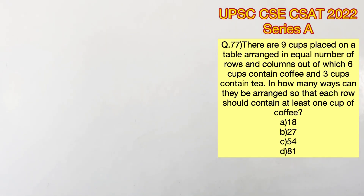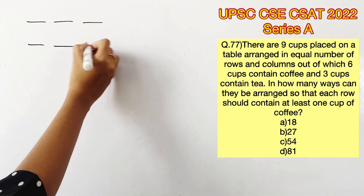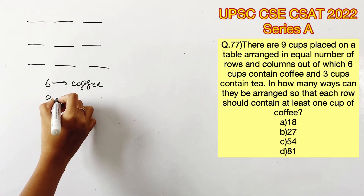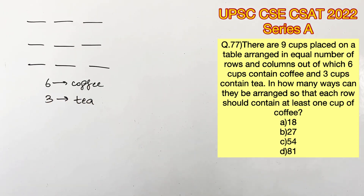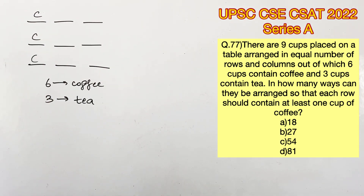Welcome to Aptitude Destination. Please pause the video and read the question completely. There are nine cups arranged in equal number of rows and columns, which means a three by three grid. There are six cups containing coffee and three cups containing tea. We need to find in how many ways they can be arranged so that each row contains at least one cup of coffee.